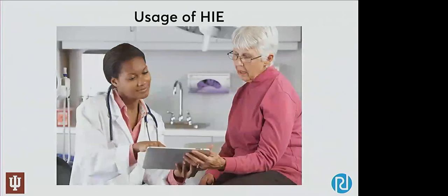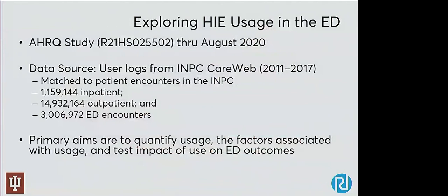My recent work has really been focused around this concept of usage — the real use of health information exchange to facilitate clinical or organizational decision making. The first ongoing study is an R21 from the Agency for Healthcare Research and Quality, where we are taking actual user logs from the IMPC network of clinicians who have logged in and used it across ED, inpatient, and outpatient settings. We're looking at what proportion of all encounters in the IMPC had a clinician actually use CareWeb — the portal for clinicians to view the longitudinal medical record — and what factors are associated with that usage.